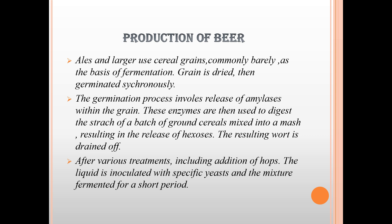In the production of beer, ales and lagers use cereal grains, commonly barley, as the basis for fermentation. The grain is dried then germinated synchronously. The germination process involves release of amylases within the grain. These enzymes are used to digest the starch of a batch of ground cereals mixed into a mash, resulting in the release of hexose sugars. The resulting wort is drained off and after various treatments, including addition of hops, the liquid is inoculated with specific yeast strains and the mixture fermented for a short period.